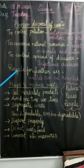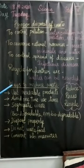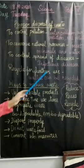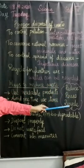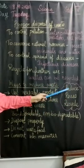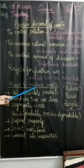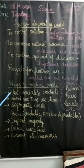Accordingly, we have to manage how we throw waste. How to reduce waste? The three ways are: reduce, reuse, and recycle. These are the three ways we can reduce our wastage. First, we will see how to reduce our waste.